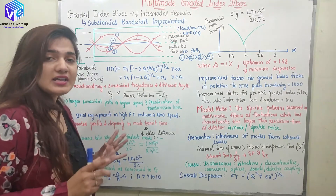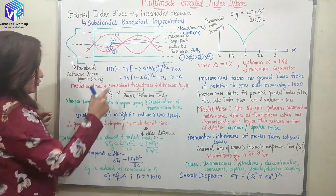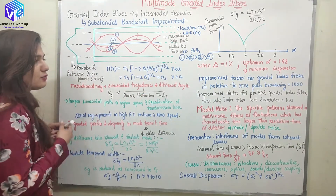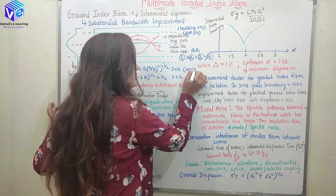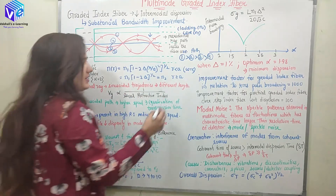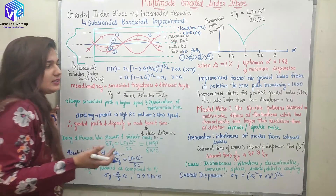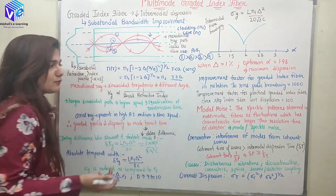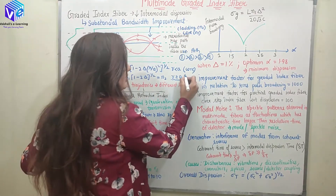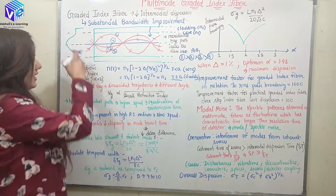When I consider alpha equal to 2, the refractive index profile can be given as N1 times (1 minus 2·delta·(r/a)²)^(1/2) for r less than or equal to a — this is the condition inside the core. Inside the core, refractive index increases as we move from the cladding towards the core center. For r greater than or equal to a, we get N1(1 - 2·delta)^(1/2), which reduces to n2, so inside the cladding the refractive index is constant.